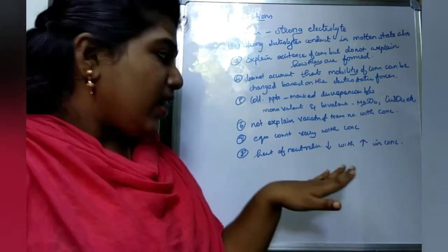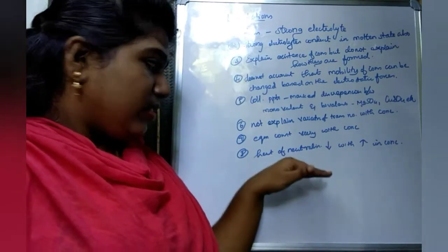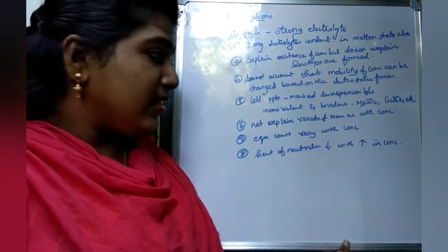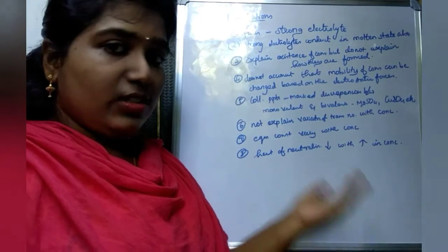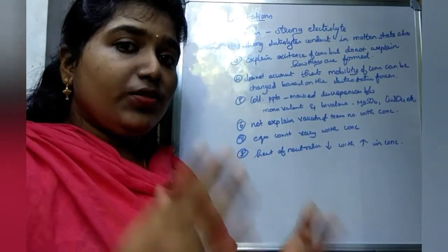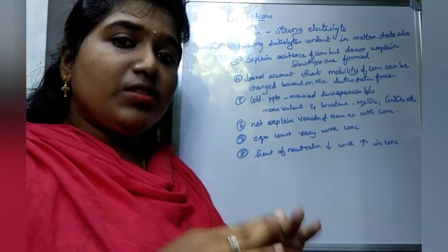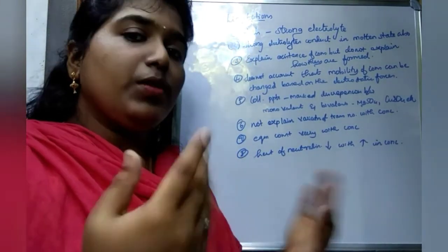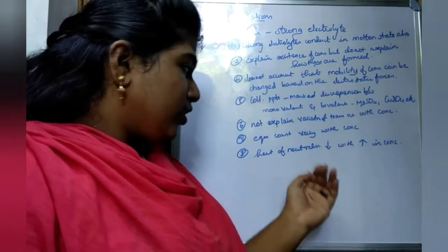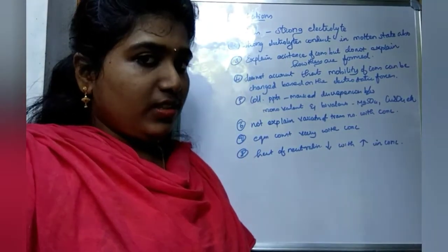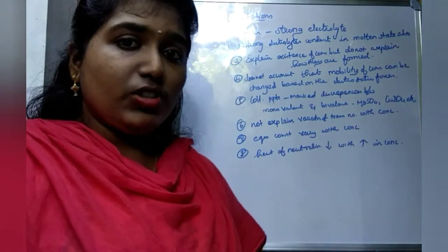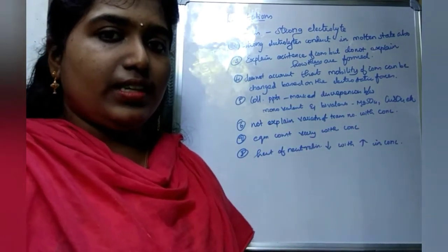Another limitation is that the heat of neutralization actually decreases with an increase in concentration, but according to Arrhenius theory it should remain the same in all cases. These are the limitations of the Arrhenius theory.